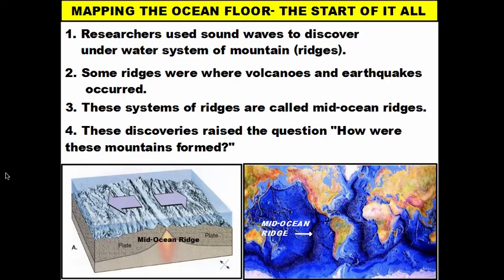Long ago, scientists basically thought the ocean floor is flat and sandy, kind of like when you walk into the first five or six feet of water at the beach — pretty flat and sandy. That's what they imagined the entire ocean looking like. It wasn't until they developed technology called sonar that they could actually see what the ground looked like underneath the ocean.